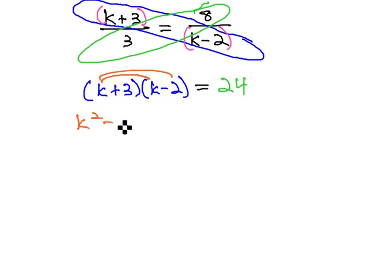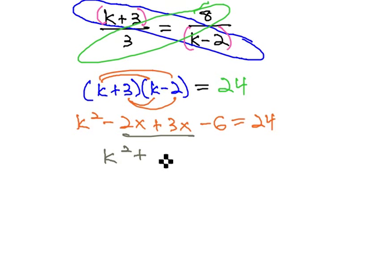K squared minus 2k plus 3k minus 6 equals 24. We can combine like terms in the center to get k squared. All right, I said k but I wrote x. That's interesting. There we go. K squared plus k minus 6 equals 24.